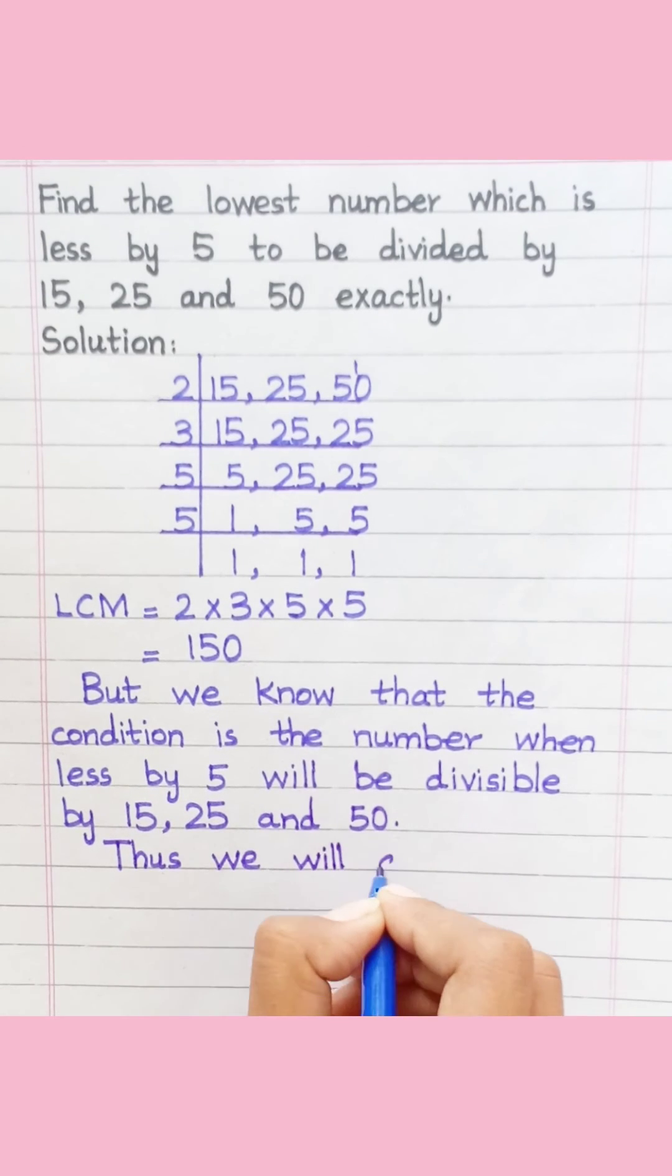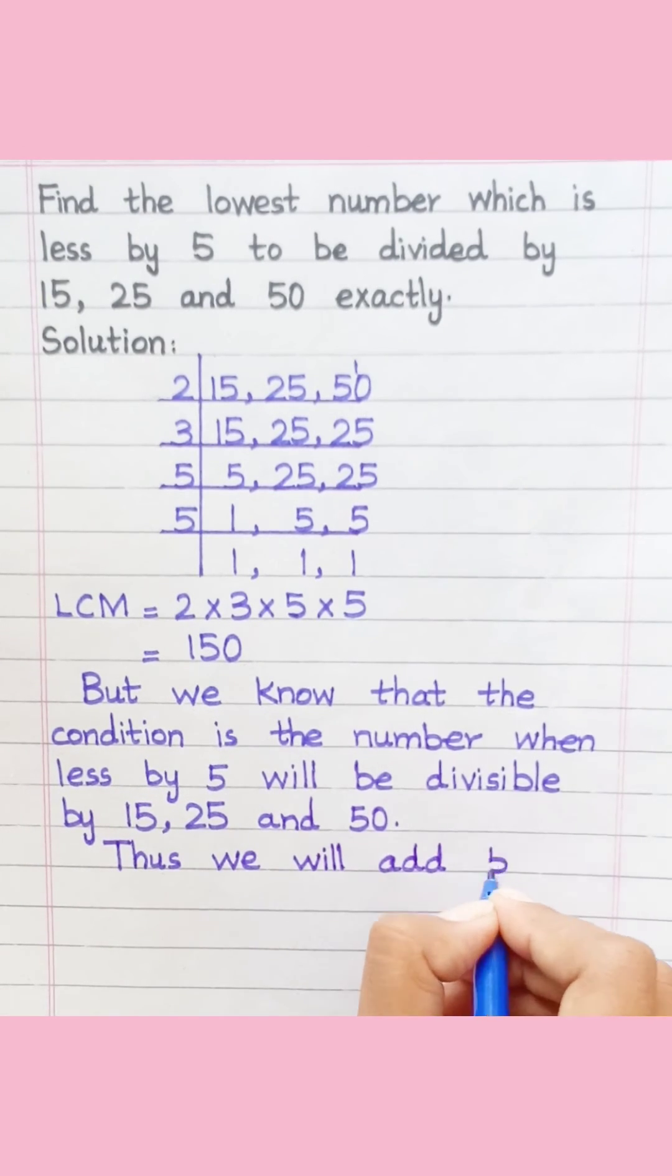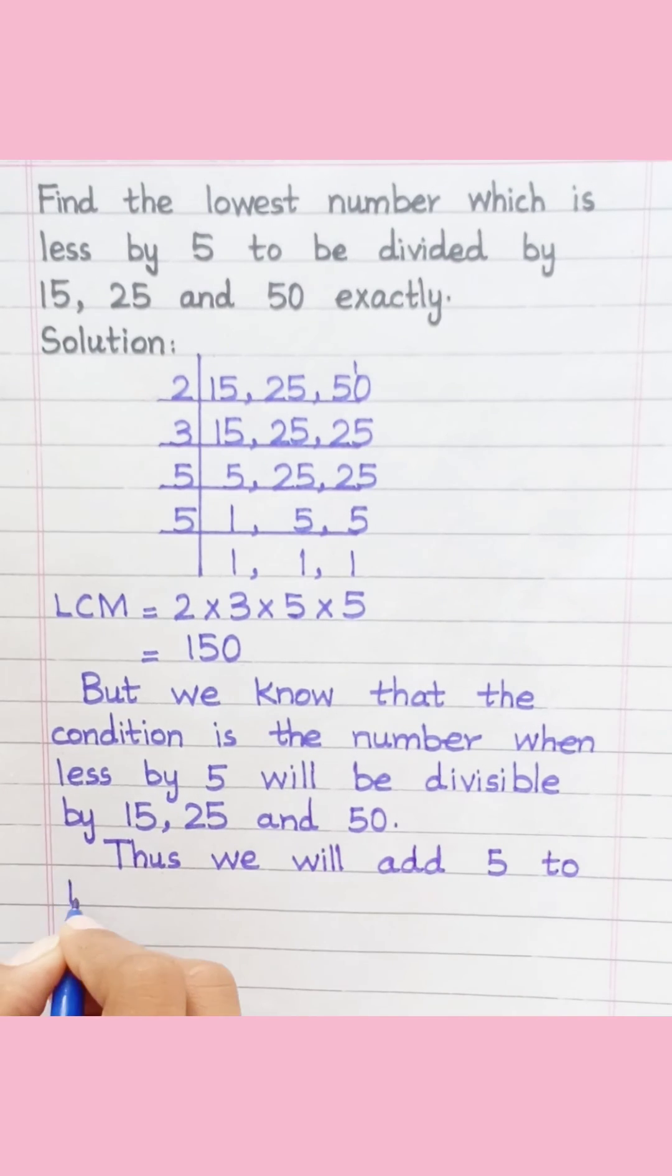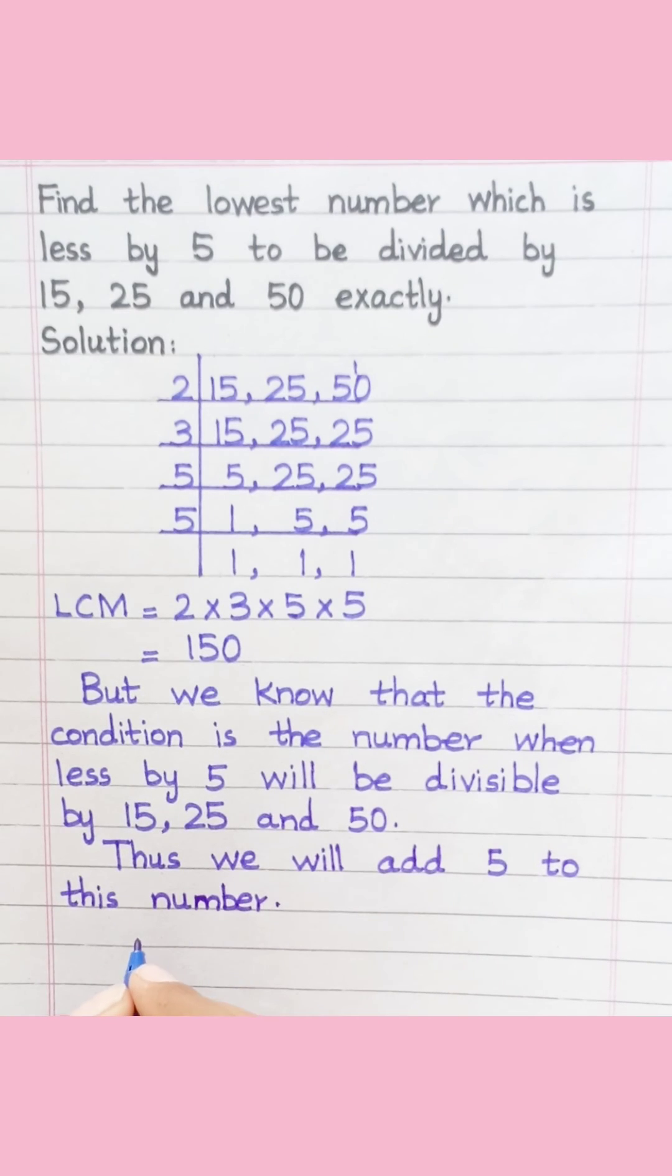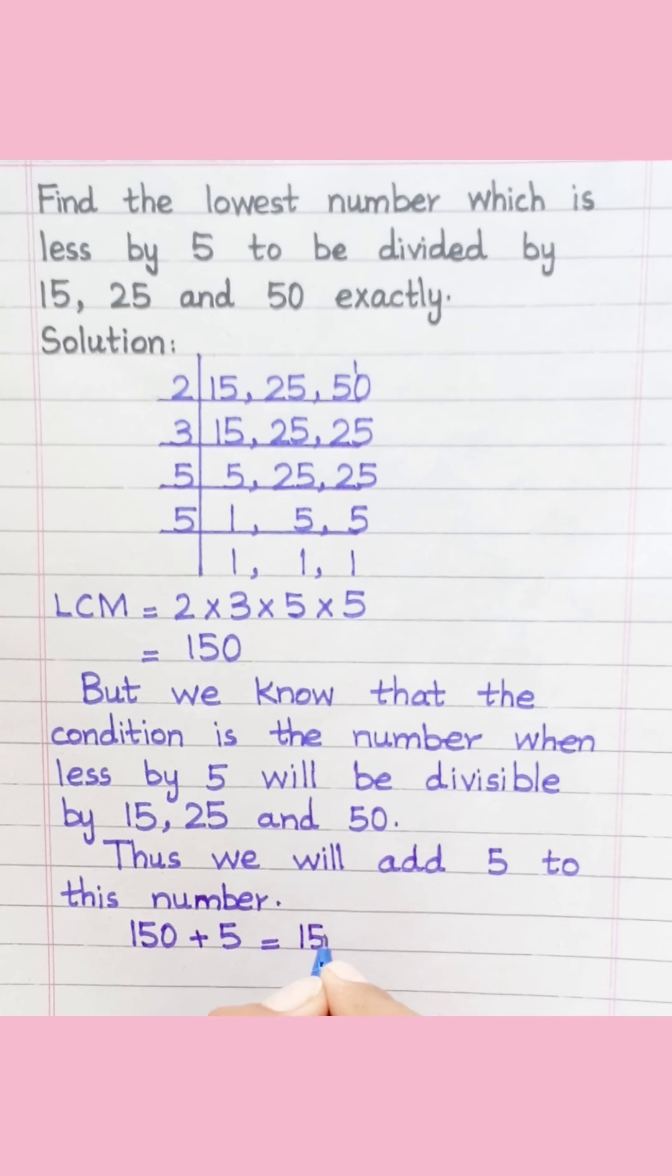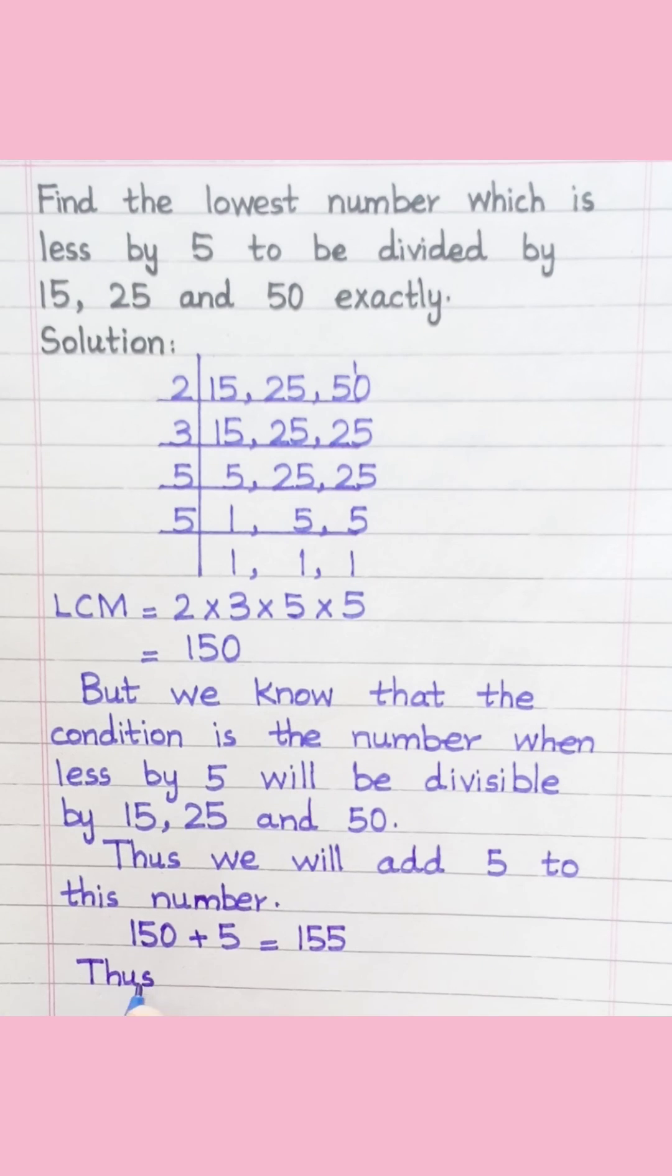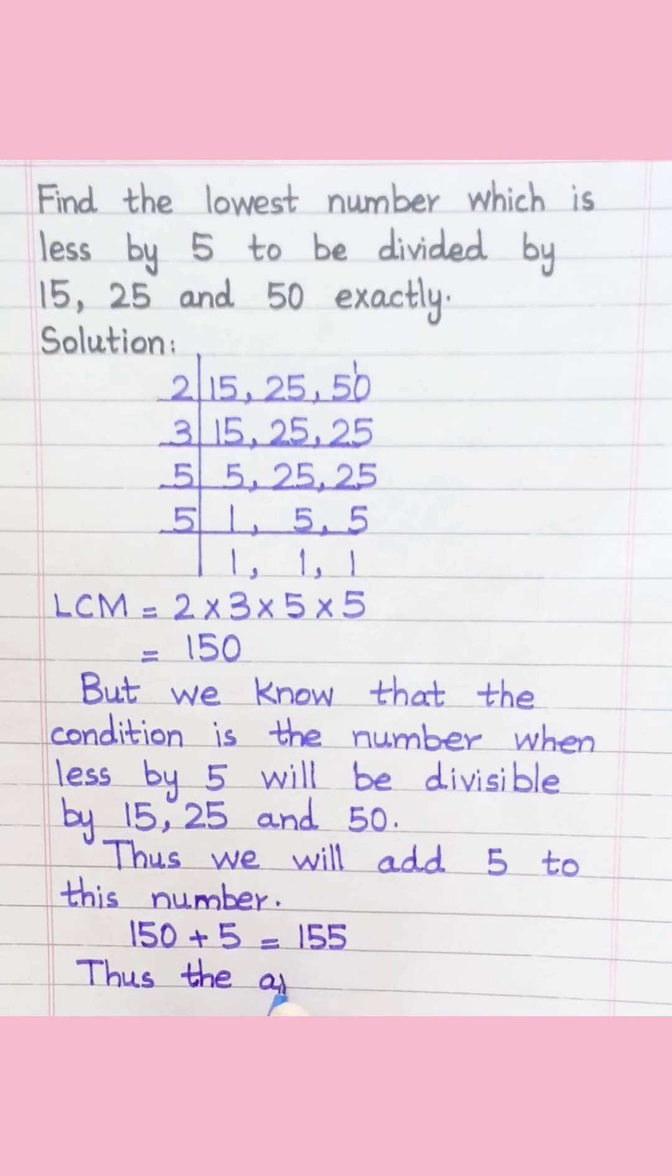Thus, we will add 5 to this number. 150 plus 5 equals 155. Thus, the answer is 155.